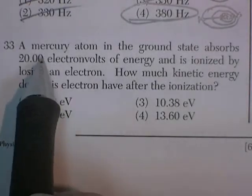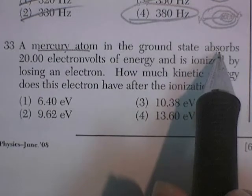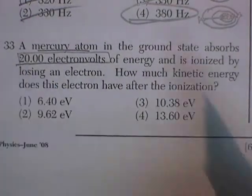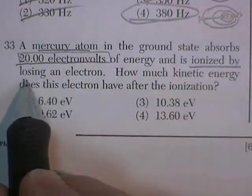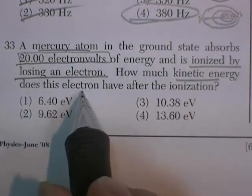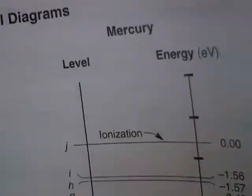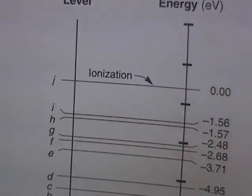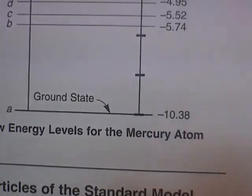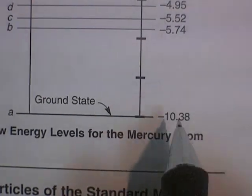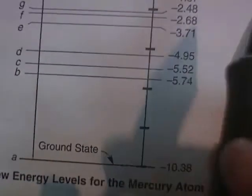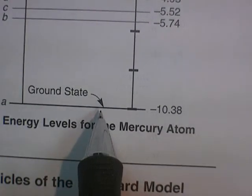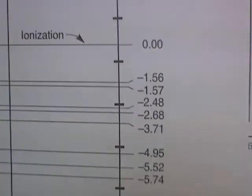Question 33. Mercury atom has a ground state that absorbs 20 electron volts of energy. It's ionized by losing an electron. How much kinetic energy does the electron have after the ionization? Well, this takes us to the energy level diagrams. And we go over to Mercury. And in the ground state, 10.38 electron volts is required to ionize this electron. It's in the ground state. It would require that much energy to rip it off. 10.38.